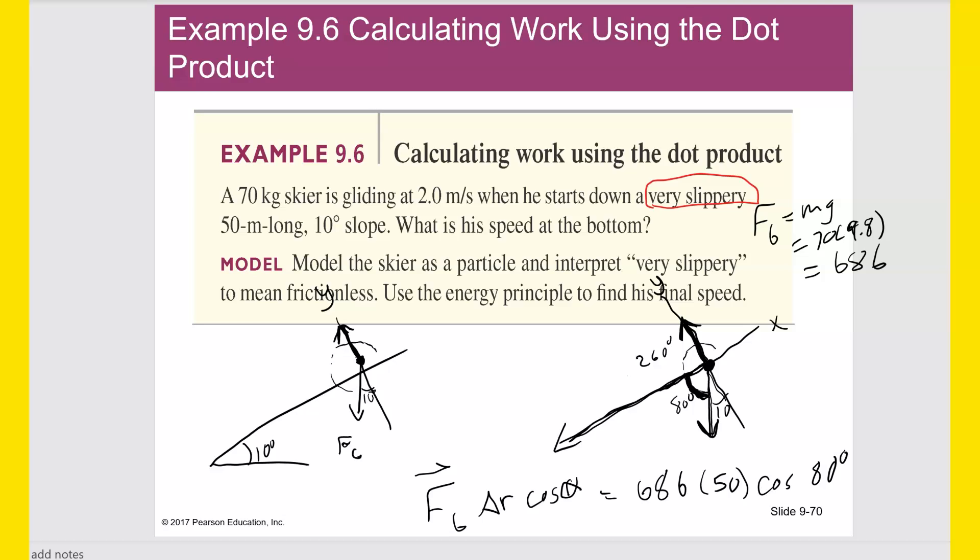So, again, we could take the angle between them like this, the force, the force of gravity, which, the force of gravity in this case is mg, which is 70 times 9.8. Let me use my calculator to calculate that, 70 times 9.8, 686. So I can say the force of gravity times delta r cosine of alpha, which in this case would be 686 times 50 cosine of 80 degrees.